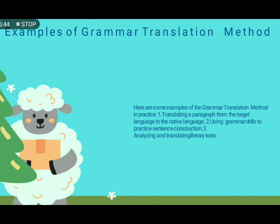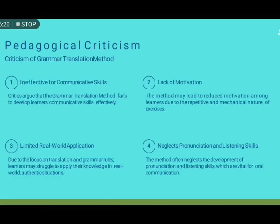Examples of the grammar translation method include: first, translating a paragraph from the target language to the native language — the target language is the language you are learning, so if we have a paragraph in English, we translate it into Urdu. Second, using grammar drills and grammatical structures to practice sentence construction. Third, analyzing and translating literary texts.